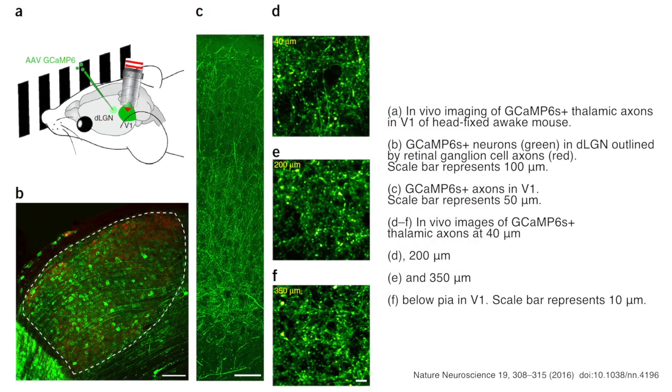One question we want to understand is how visual processing happens — what kind of input the cortex receives from a structure called the visual thalamus, and how neurons use those inputs to generate new properties that allow us to detect edges, contrast, and so on. We look at living mouse brains, usually head-fixed so they cannot move around, and the cells inside the brain express certain fluorescent molecules whose brightness tells us whether the cell becomes active and fires an action potential.